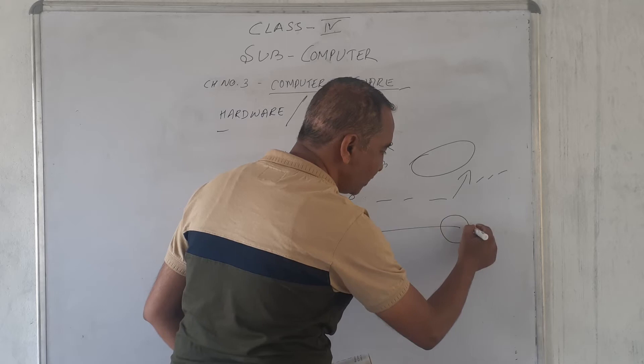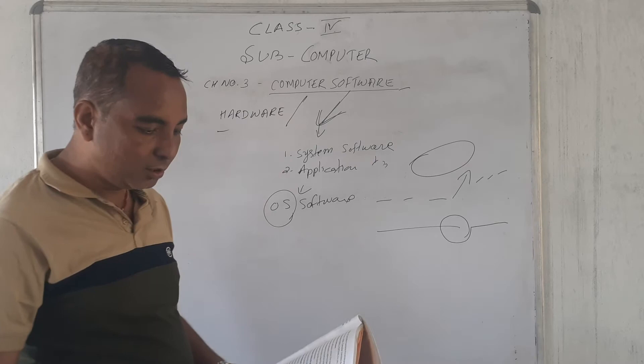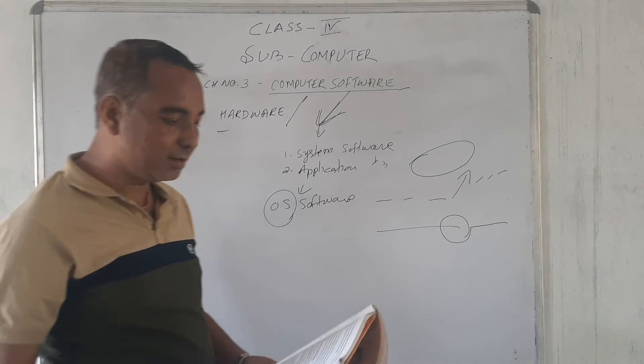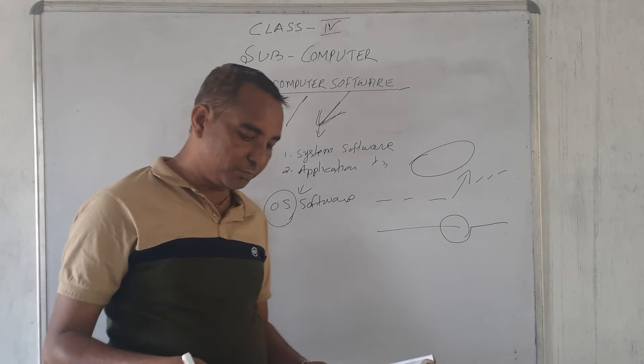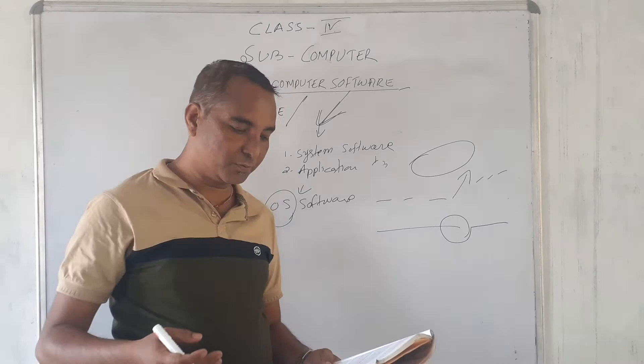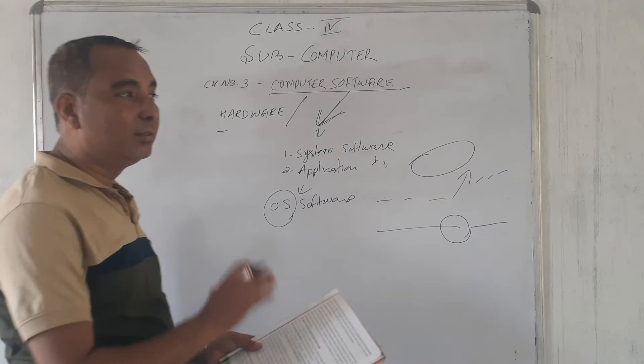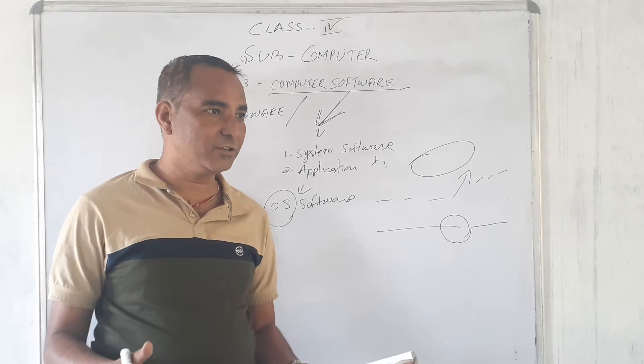So, application software utilizes the capacity of a computer directly for a detectable task. Application software is able to manipulate text, numbers and graphics. Different types of application software: Word processing software. Word processing software enables the user to create and edit documents. The most popular examples of this type of software are MS Word, Notepad, WordPad. In this program, what you do? This program helps us to write application letters. Whatever type of document work you want to do, that will work in this word processing software.